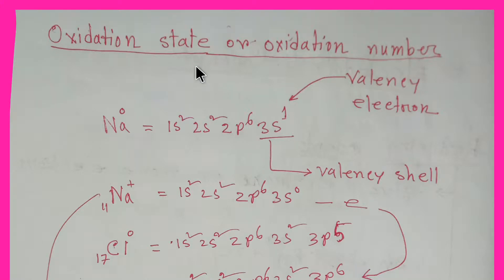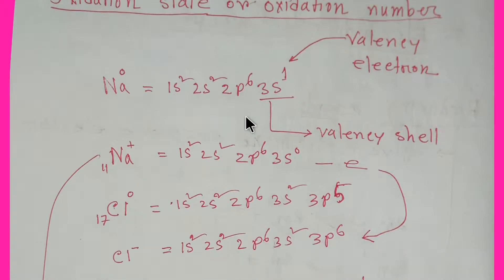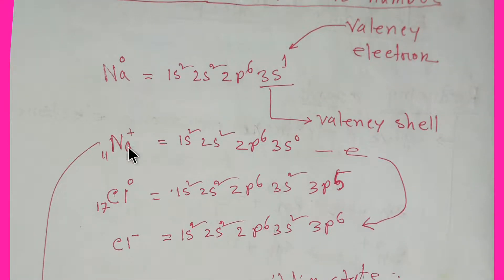Hello viewers, today we are going to learn about oxidation state or oxidation number. These two terms are similar, and I'll try to make you understand easily. You know that in sodium chloride you will get sodium plus ion and chloride negative ion.